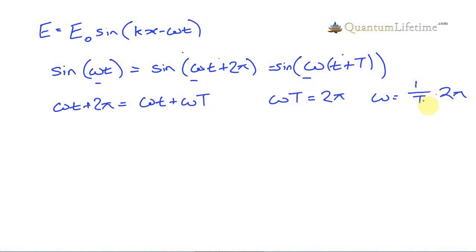Now what is 1 divided by T? T is the period of the wave, the time it takes for one wave to pass. And 1 divided by T is equal to the frequency, which we'll call f here. So we can see that omega is actually equal to 2 pi times f.